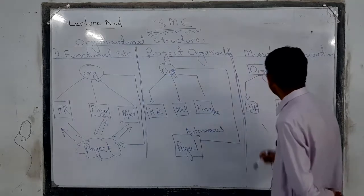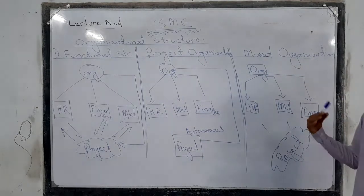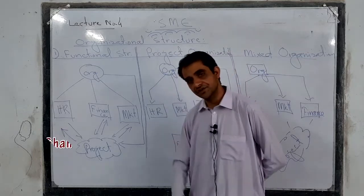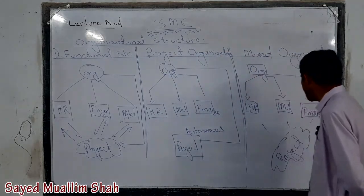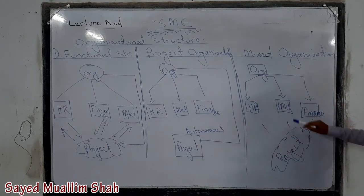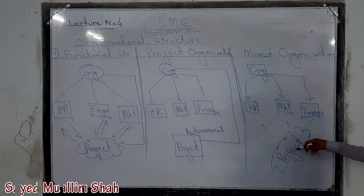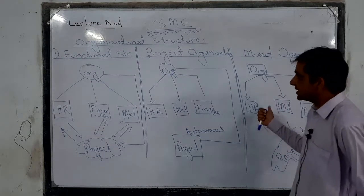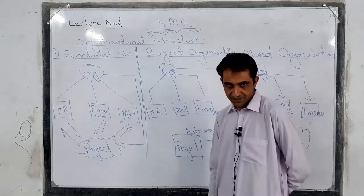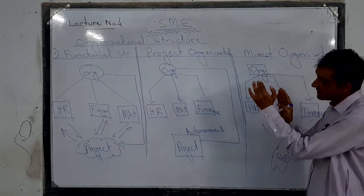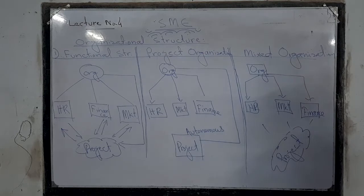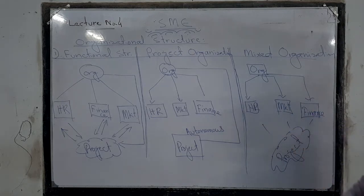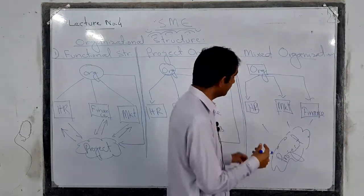Next is mixed organization. From its name it is clear that it is a structure that lies in between functional structure and project organization. Here we have HR department, marketing department, and finance department, and at the same time there is also a project team. It resembles the functional structure because people are taken from the HR department, marketing department, and finance department for a specific period of time.